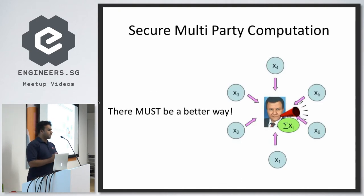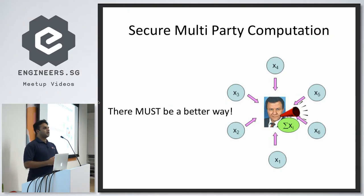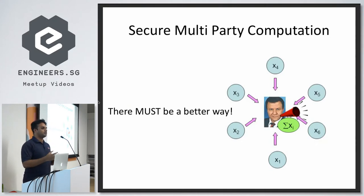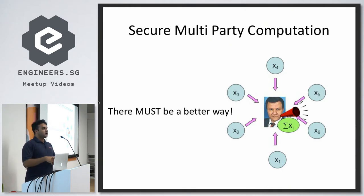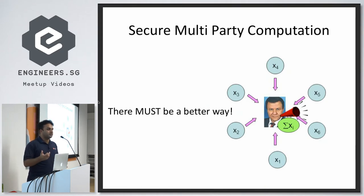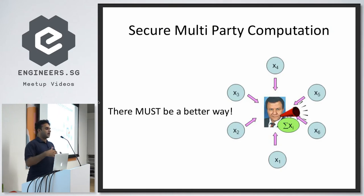Secure multiparty computation deals with the following question. Say there are parties P1, P2, up until PN, and each holds a piece of data X1, X2, up until XN. Given any arbitrary function F which operates on X1 to XN or any subset, secure multiparty computation asks: can you compute F without revealing any of X1 to XN?